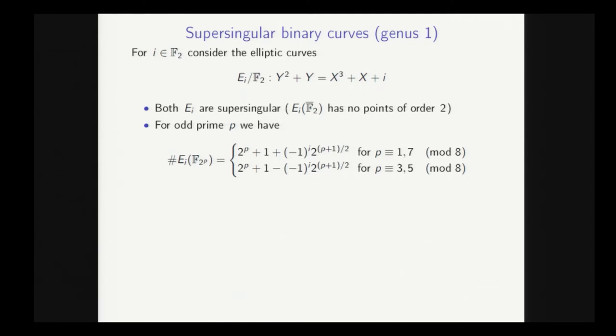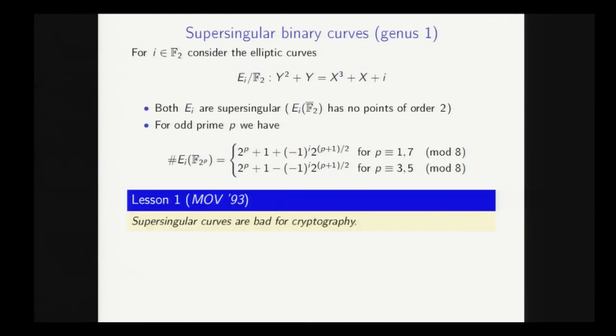However, around 1993, thanks to Menezes, Okamoto and Vanstone, they realized that one can take an elliptic curve DLP and map it via a pairing to a finite field DLP in an extension of the base field over which the elliptic curve is defined. And they also knew that supersingular curves have low embedding degree.